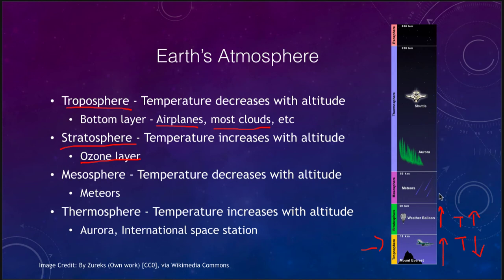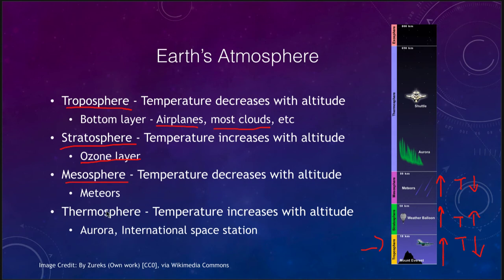Above the stratosphere we have the mesosphere, where the temperature again decreases as you move through this layer. Temperature changes are not constant — they do not get continually colder or continually hotter as you go further out. That is because temperature is a measure of the motion of the particles; where you get fewer particles but they are being excited more, the temperatures will actually increase. In the mesosphere, the temperature decreases, and that is where meteors burn up — meteor material striking the atmosphere at close to 80 kilometers, where the atmosphere is dense enough that they start to burn, producing meteors or shooting stars.